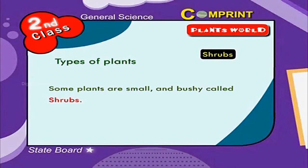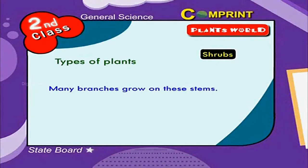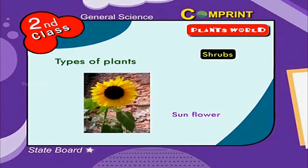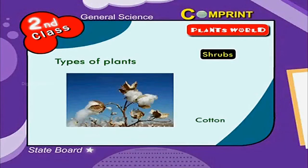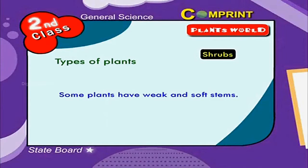The shrubs have thin and hard stems. Many branches grow on these stems. They bear flowers. For example, rose, sunflower, cotton, hibiscus, etc. Some plants have weak and soft stems.